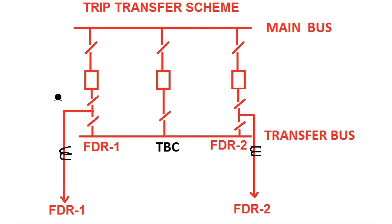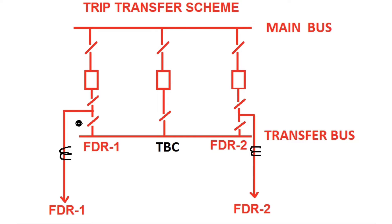In this video, a single line diagram has been shown where one main bus and one transfer bus is connected for a substation, and there are two feeders. This is the feeder 1 bay, this is the feeder 2 bay, and this is the TBC — that is the transfer bus coupler bay.